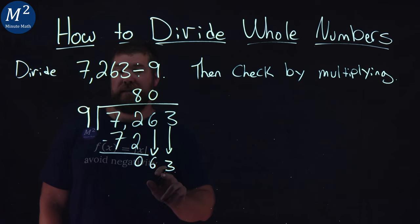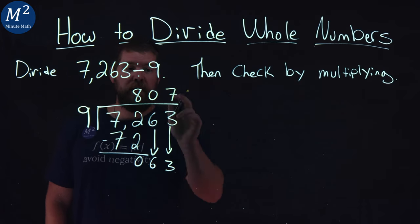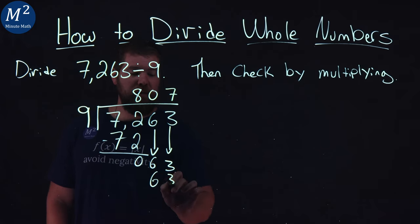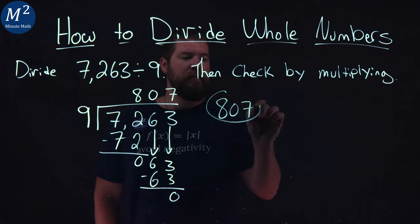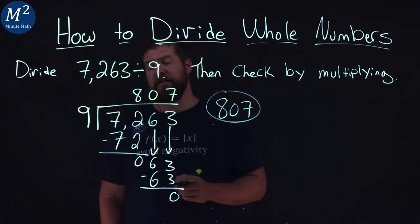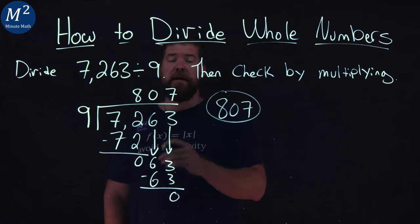Now does 9 go into 63? And that is a yes. Exactly 7 times. 7 times 9 is 63. We subtract the two and we get 0. So 807 is our answer when we take 7,263 divided by 9.